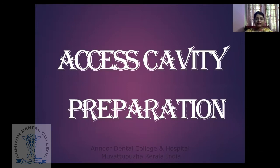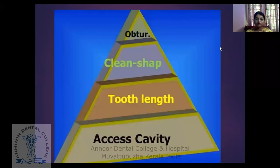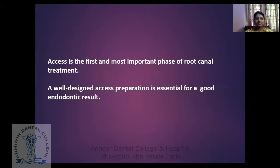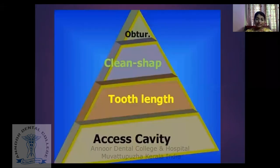The topic today I'll be talking about is Access Cavity Preparation. Access is the first and most important phase of root canal treatment. A well-designed access preparation is essential for a good endodontic result. There are four main procedures: a good access cavity preparation, a good working length, proper cleaning and shaping, and a three-dimensional obturation, which together determine the success of root canal treatment.